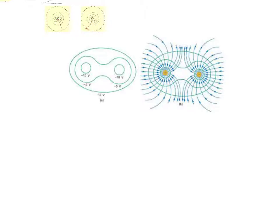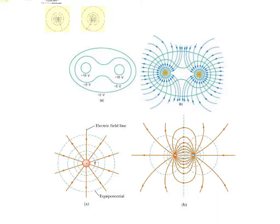If we have two unlike charges, we can see that the equipotentials and electric field would look like this picture here. On the left we've got just our equipotentials, and here we've got the field inserted in there as well. The picture on the right is for two like charges. We've got a positive charge and a negative charge — here's our positive charge, here's our negative charge. We know it's a negative charge because our electric field is pointing toward it.